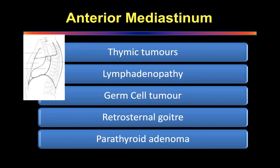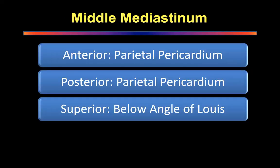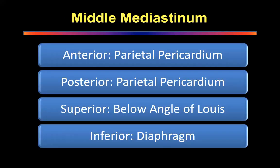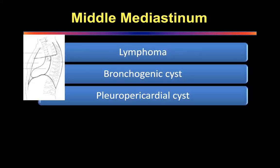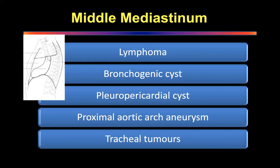What are the three commonest lymphadenopathies? Tuberculosis, lymphoma, and sarcoidosis. The middle mediastinum is bounded by parietal pericardium in front, parietal pericardium in the back, angle of Louis superiorly, and diaphragm inferiorly. Tracheal tumors are present in the middle mediastinum.